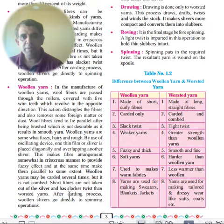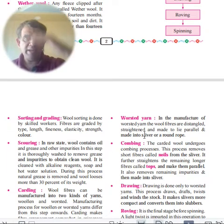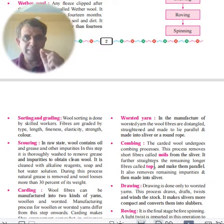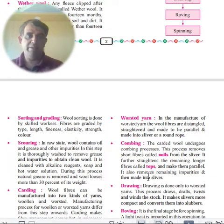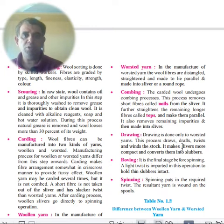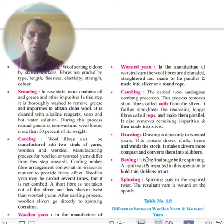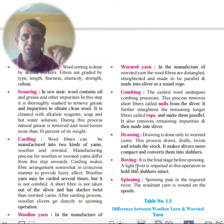For worsted yarn, after carding, the wool fibers are straightened and made parallel to each other. Combing then removes short fibers (noils) and strengthens the remaining longer fibers called tops (4–8 inches). Drawing — done only for worsted yarns — drafts, twists, and winds the fiber stock, making slivers more compact and converting them into slubbers.